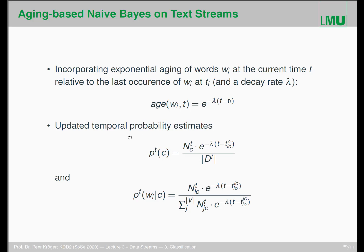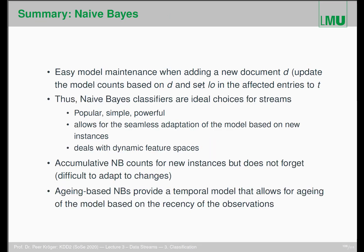We update the accumulated counts — or more precisely the temporal probability estimates — by weighting all counts with their aging weights. We do the same for the observation probabilities. This is a very easy model maintenance approach: when new documents arrive through the stream, we update the model counts based on the incoming document and the set of affected entries related to t. We can easily integrate any aging model we want.